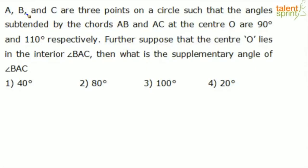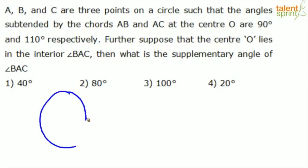The question says A, B, and C are three points on a circle. Let's construct that first — this is the circle, this is point A, here is point B, and this is point C. This is the center O.